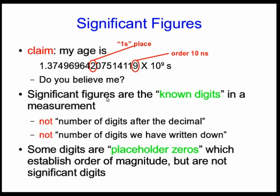So the significant figures are the known digits in a measurement. It's not the number of digits after the decimal, it's not the number of digits we've written down. To understand the difference, you need to understand this idea of placeholder zeros, which are there to just establish the order of magnitude of the number but aren't significant digits.